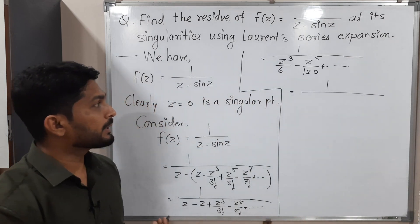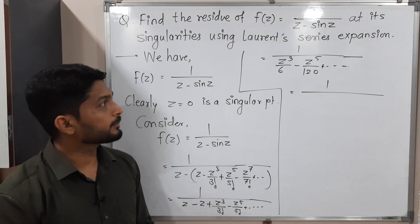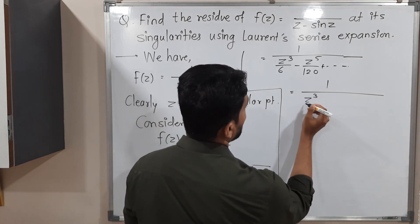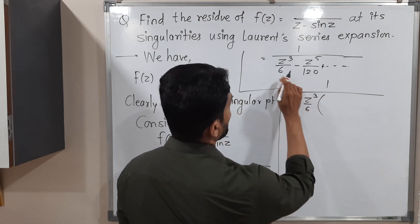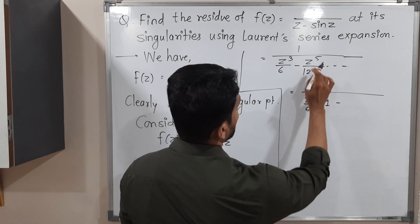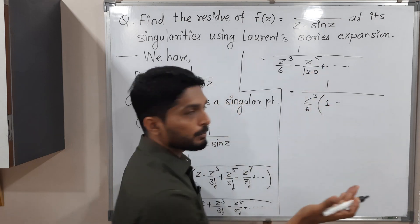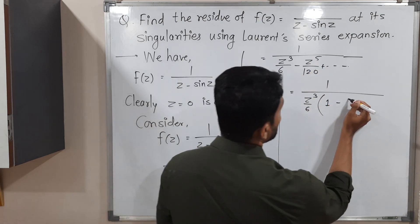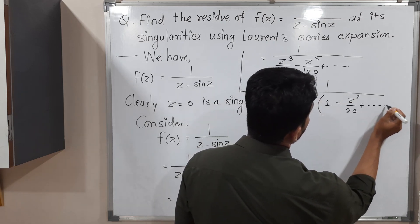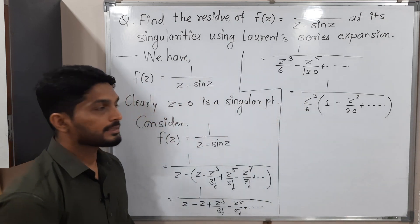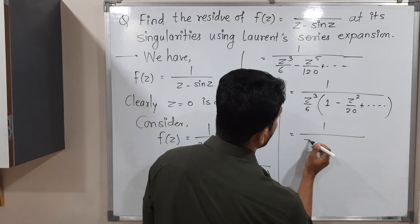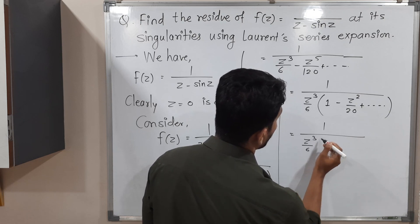We can take z³ common from the denominator terms, and also factor out 6. Taking z³ and 6 common from z³/6 − z⁵/120 + ..., we get z³/6 times (1 − z²/20 + ...). So the function becomes 1 divided by [z³/6 · (1 − z²/20 + ...)].